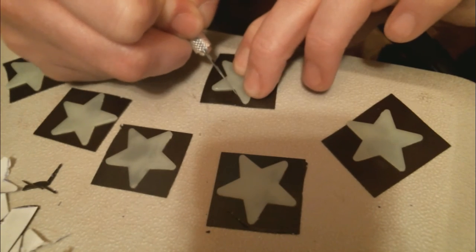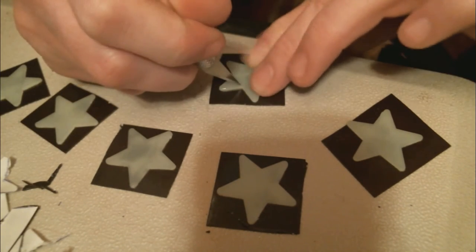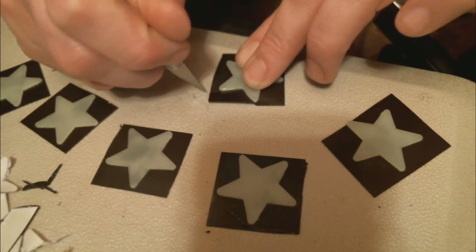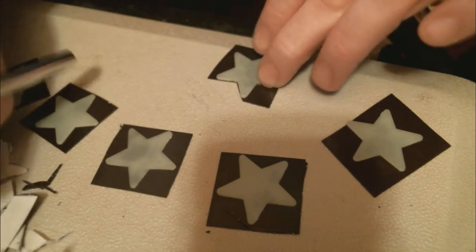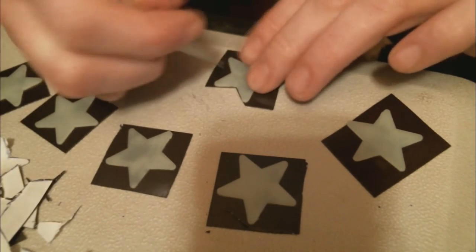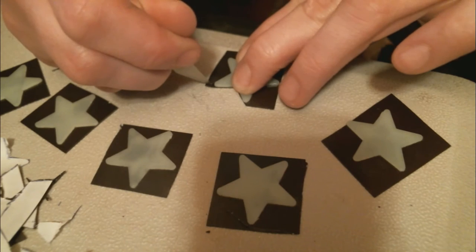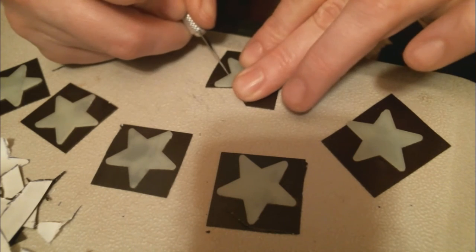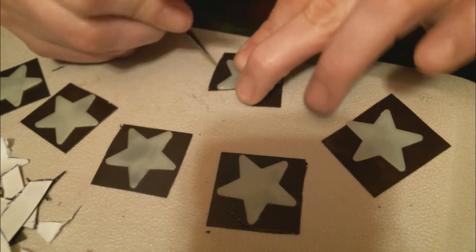Now, I recommend cutting in between each section of the star first and then going back and cutting off the edges of the stars after, kind of like what I did here. I cut the triangular part and then I cut off the edge.